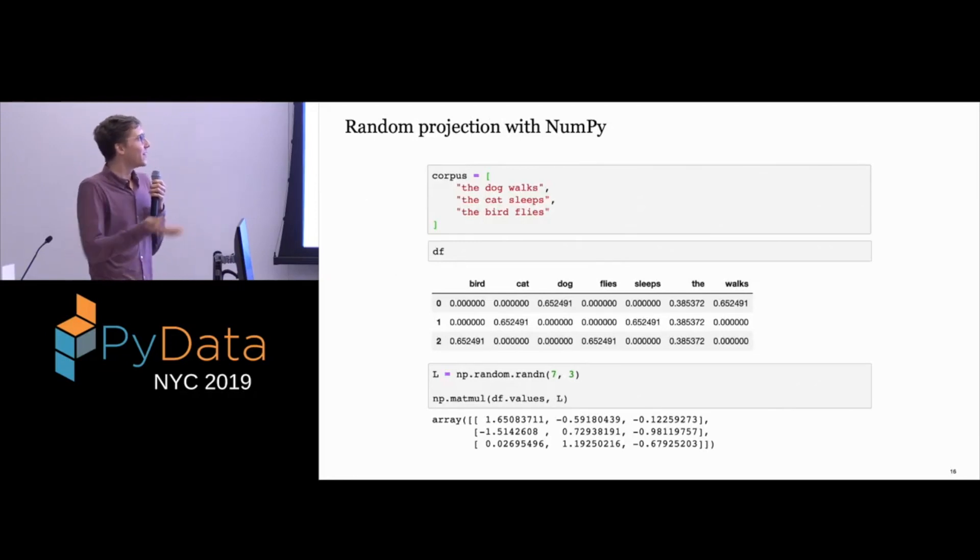We'll see those next, but first, really quickly, maybe this isn't too surprising either. If we have our same corpus, our same TF-IDF encoding, this is the simplest random projection you could possibly think of, where you just multiply it by a completely random, normally distributed matrix, and then this new matrix would be our training data.